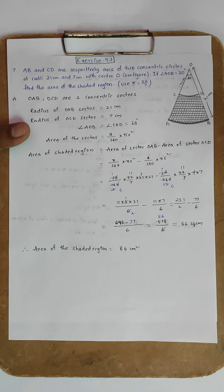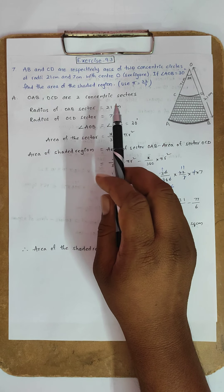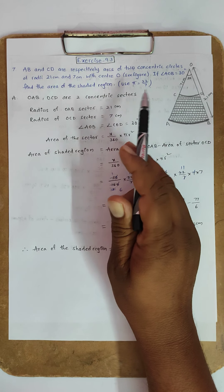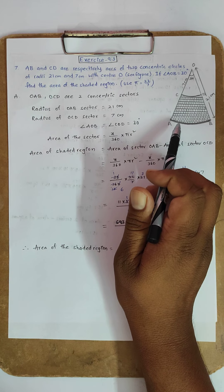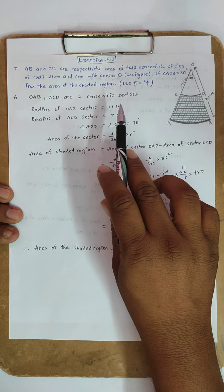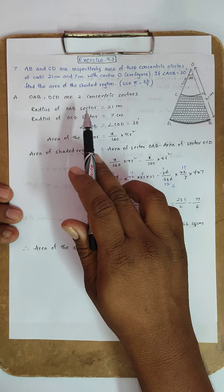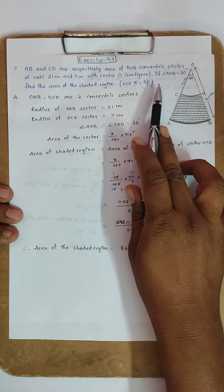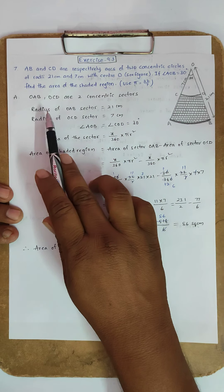Next, problem 7. AB and CD are respectively arcs of two concentric circles. A, B, C, D are parts of two concentric circles — parts AB and CD are arcs of radius 21 cm and 7 cm respectively, with center O. The angle AOB is 30 degrees. Find the area of the shaded region.